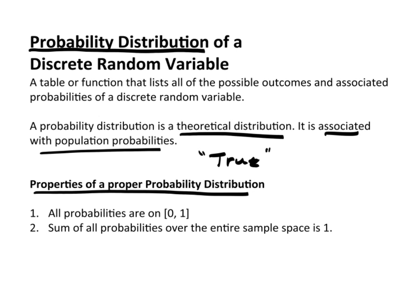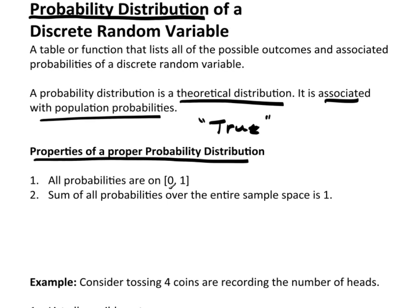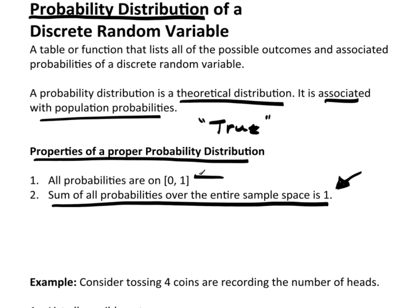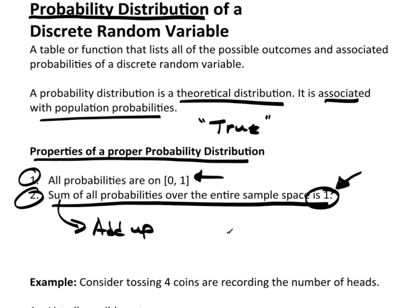Some quick properties of a proper probability distribution. Number one: all probabilities are on the interval zero to one, so every event has a probability with a minimum of zero and a maximum of one. Number two: the sum of all probabilities of the entire sample space is one. That should intuitively feel right — if I add up the probability of everything inside my sample space, I've considered everything, which is my entire universe, which equals one. So a quick check: make sure you don't have any negative probabilities and none bigger than one, then add them all up and verify the sum equals one.